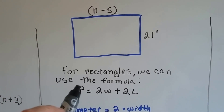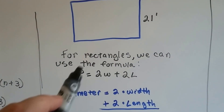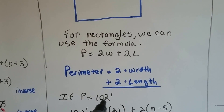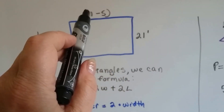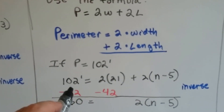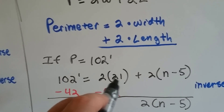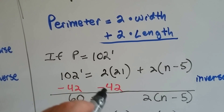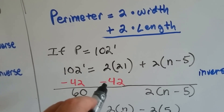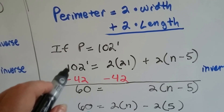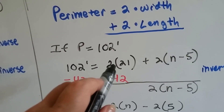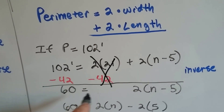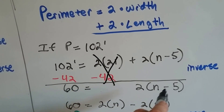For rectangles, we can use the formula p is equal to 2w plus 2l — that means the perimeter is equal to 2 times the width plus 2 times the length. If the perimeter is 102 feet, and we've got a width of 21 and a length of n minus 5, our equation is going to read: 102 feet is equal to 2 times 21 plus 2 times the quantity n minus 5. 2 times 21 is 42, so we're going to subtract 42 from each side of the equal sign. 102 minus 42 is 60, and the zero pairs canceled out, leaving 60 is equal to 2 times the quantity n minus 5.